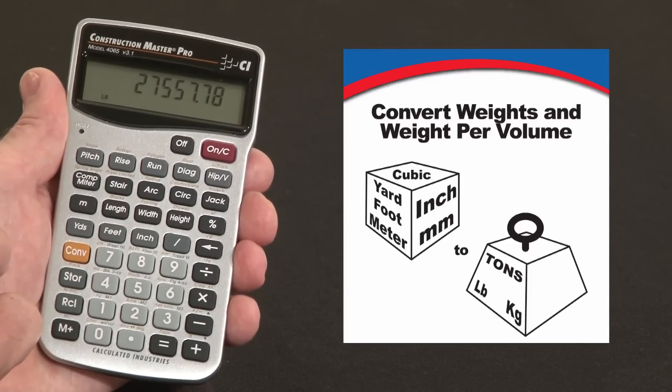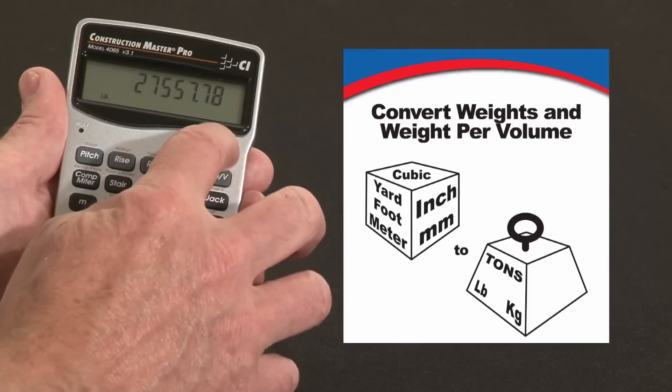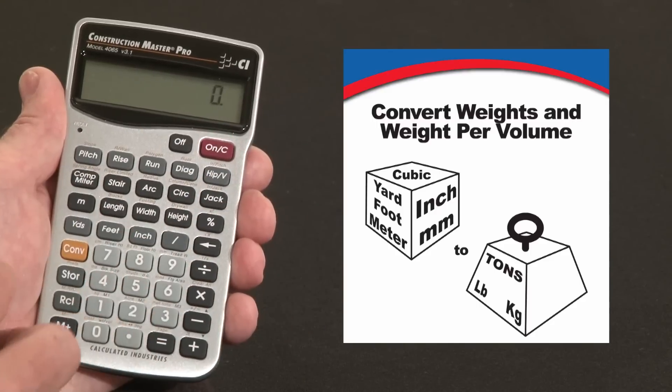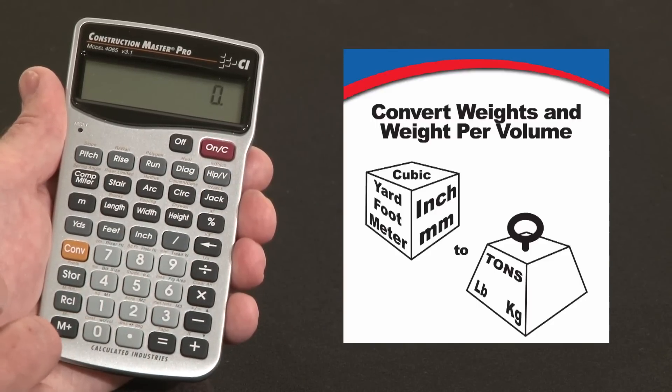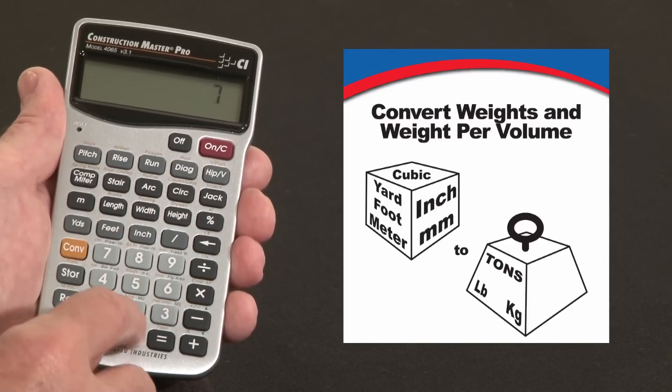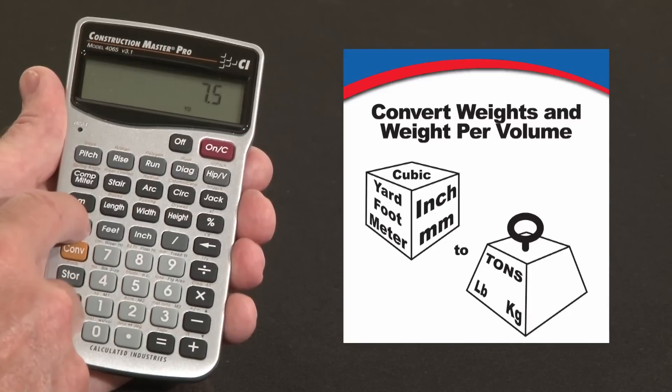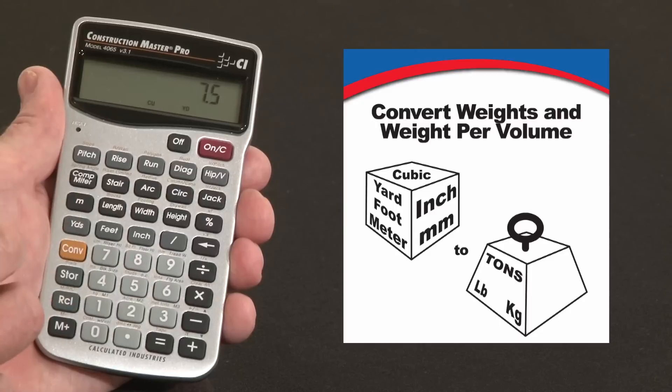You can also convert weights per volume. So say you've calculated or you know a certain volume, you've calculated you need 7.5 cubic yards of sand, let's say. 7.5 yards once, yards twice, 3 times makes it cubic yards.